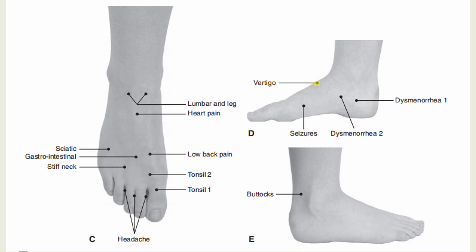On the medial aspect of the foot: the vertigo point is located in the depression above the tubercle of the navicular bone. Indications include vertigo, headache, high blood pressure, and acute tonsillitis.